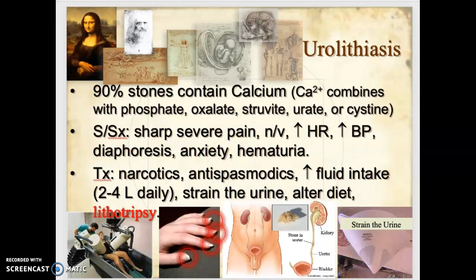About 90% of kidney stones contain calcium, which combines with phosphate, oxalate, struvite, urate, or cysteine. This is important because if someone gets recurring kidney stones, they can modify their diet. For example, if someone consistently gets calcium oxalate stones, removing green leafy vegetables from their diet can help prevent their formation.